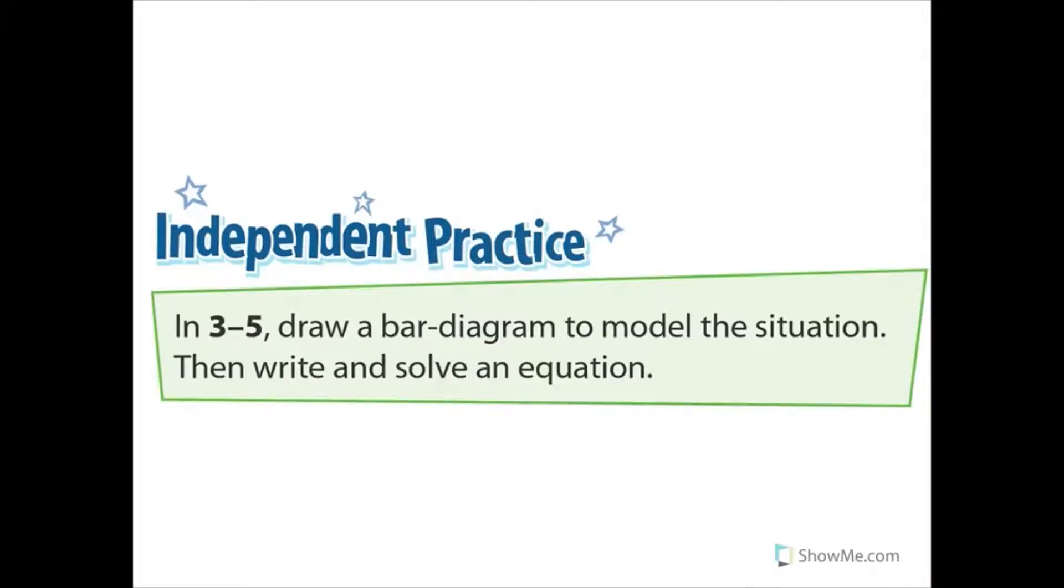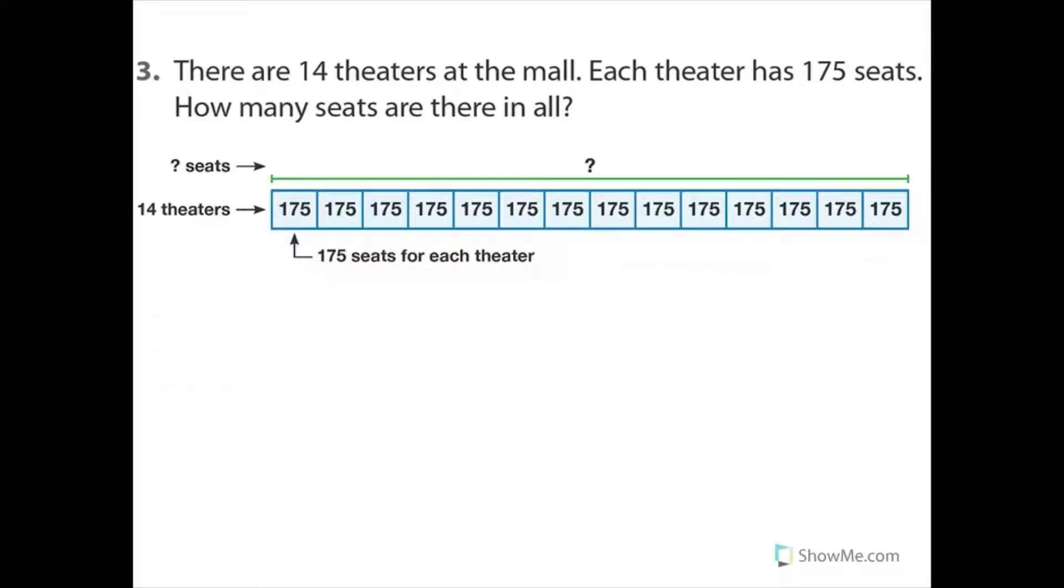Moving on to number 3 through 5. So in 3 through 5, draw a bar diagram to model the situation, then write and solve an equation. Again, we're not going to draw a bar diagram. You can if you want to, but what I'm going to do is just maybe draw a picture that represents it. Just to make sure we clarify what's going on. So go ahead, read and solve number 3.